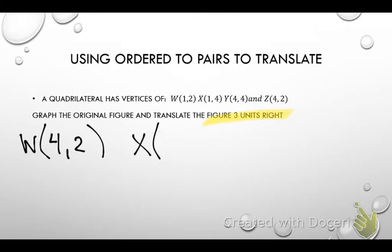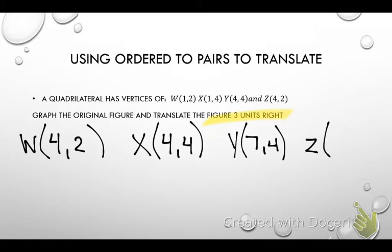Logan, throw it to Anthony. Anthony, what do you think for X? 4, 4. Very good. Anthony, go ahead and toss it over to Joshua. What's Y going to be? 7, 4. And then what about Z? 7, 2. So Z is 7, 2.